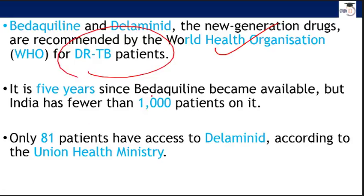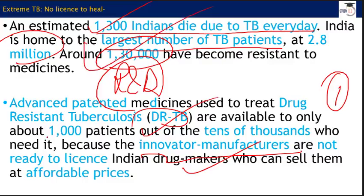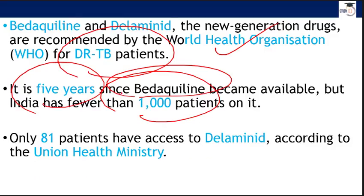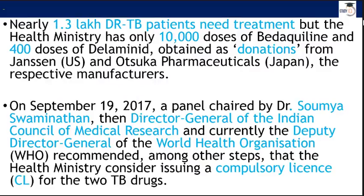Since the introduction of bedaquiline five years ago, only 1,000 patients in our country have access to it. Compare this with 1,300 dying every single day. Out of 30 lakh patients, only 1,000 have access — that ratio is very bad. Only 81 patients have access to delamanid. We received 10,000 doses of bedaquiline and 400 doses of delamanid as donations, which is a matter of concern.